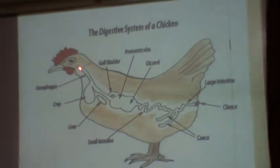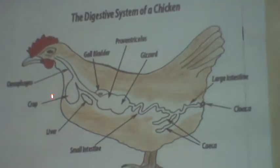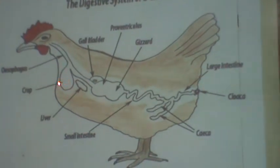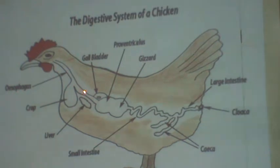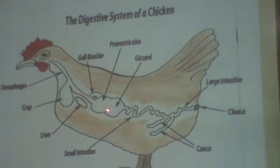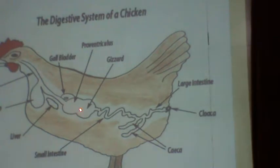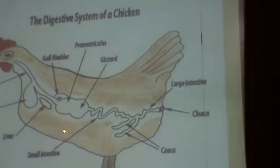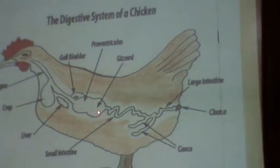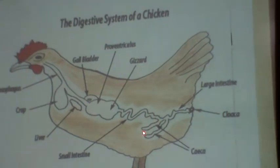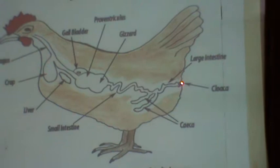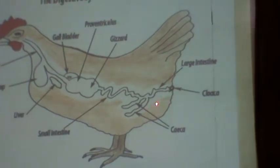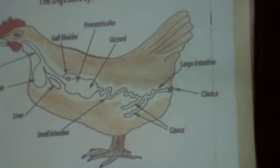The alimentary canal of the bird includes the buccal cavity, pharynx, esophagus, and crop. In the crop, birds sometimes store grains or seeds. Next is the gizzard, where larger food particles — seeds and grains — are broken into smaller forms. Then comes the intestine, intestinal caeca, a short rectum, and the cloaca, which is the common chamber. This is the digestive system of the bird.